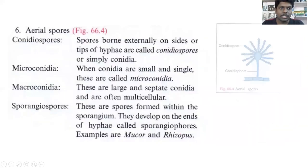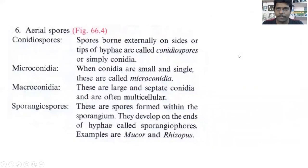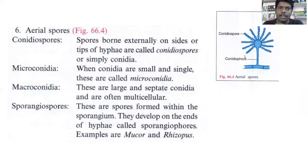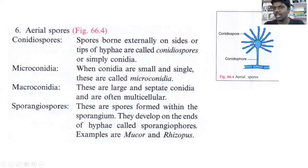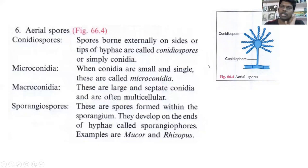In aerial spores, first we have conidial spores. Conidia means hair in Greek — it looks like a head with hair-like structures above the spores. From the hyphae you will get a conidiophore, and the conidia are connected to the head by a small rod-like structure called sterigmata. Spores born externally on the sides or tip of the hyphae are called conidia.